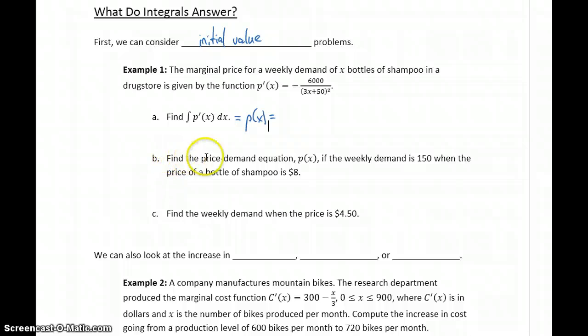So what we'll do is look at finding the price demand equation, p of x, starting with that indefinite integral that we have, knowing that if the weekly demand is 150, so demand is our x variable, when x is 150, the price of a bottle of shampoo is $8. So this is our value for p, or more specifically, p of 150.